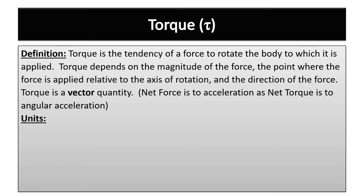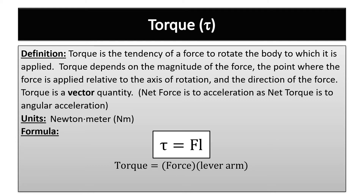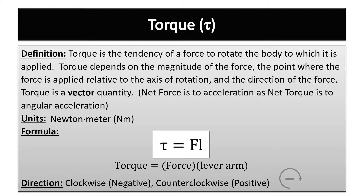The units come from the formula: tau equals force times the lever arm. The lever arm is how far from the axis of rotation the force is being applied, measured in meters. So the units are newtons times meters — newton meters. Since torque is a vector quantity, clockwise is negative and counterclockwise is positive by convention.